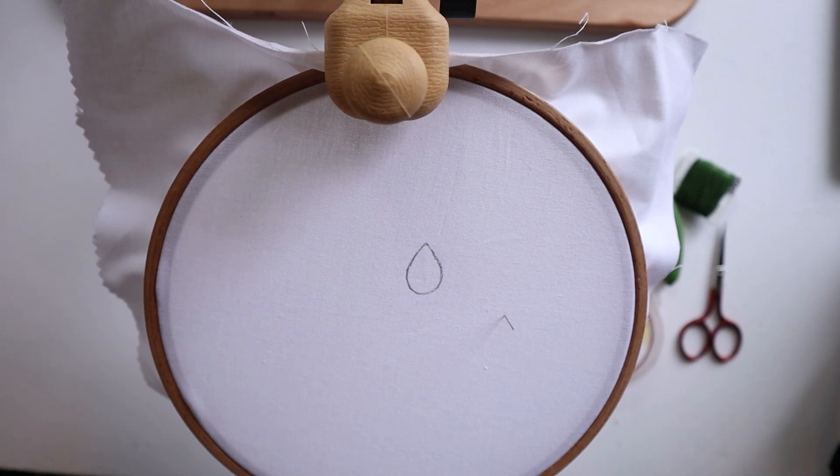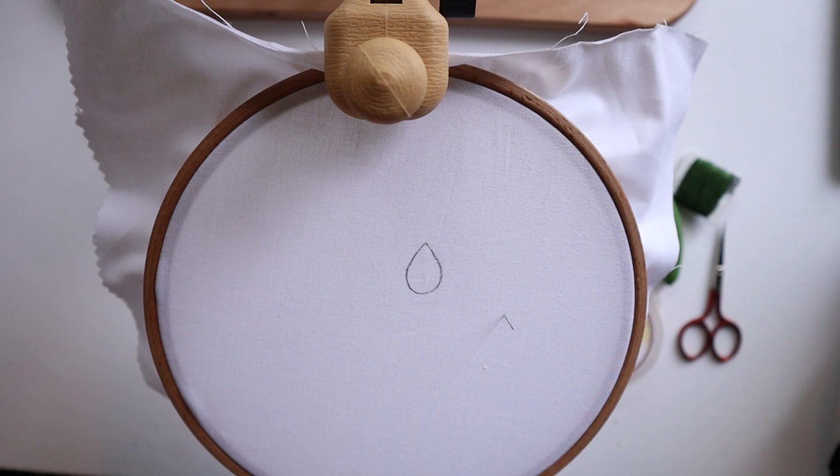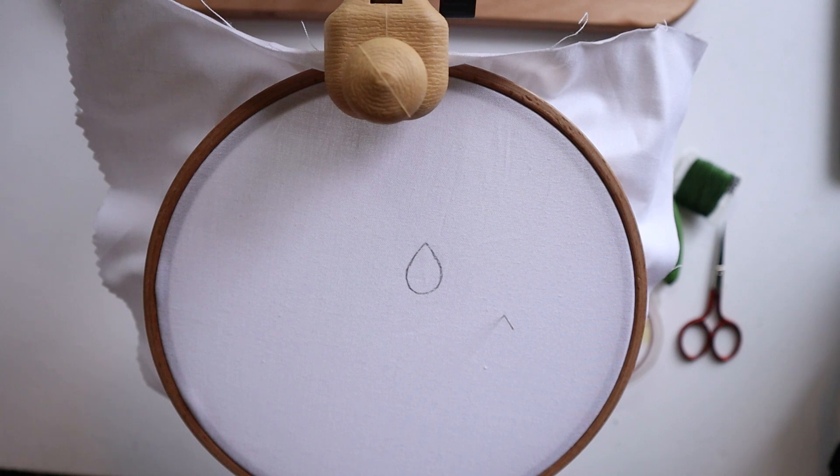This video is a quick simple tutorial about how to do some wire work technique which is used a lot of the time in stump work embroidery. This will basically be something that you'll stitch and be able to cut out, and you can add it to your embroidery pieces to make it look more three-dimensional.